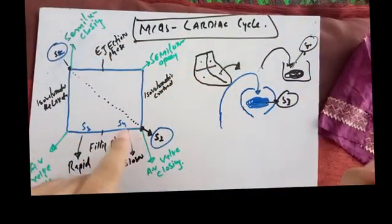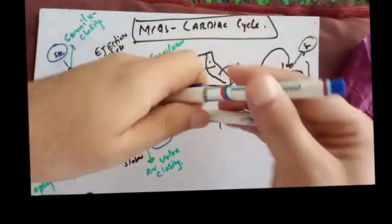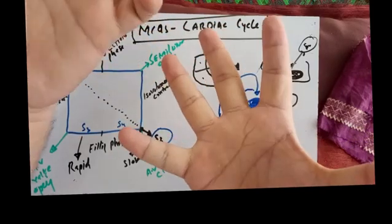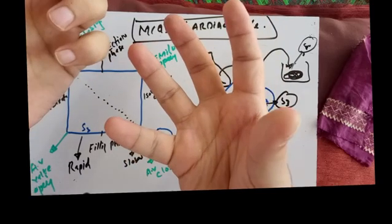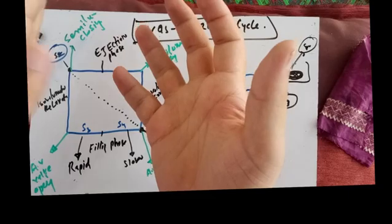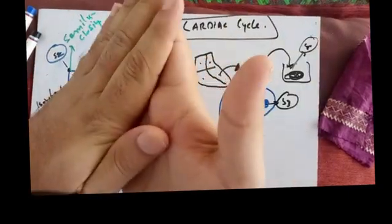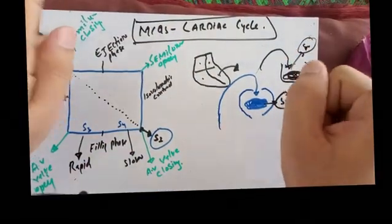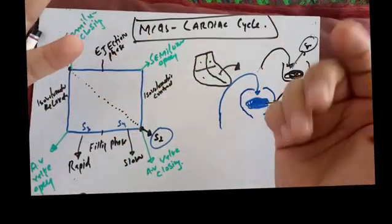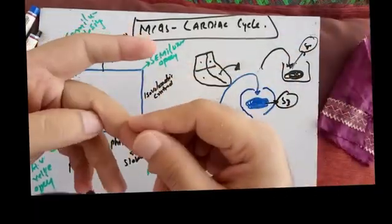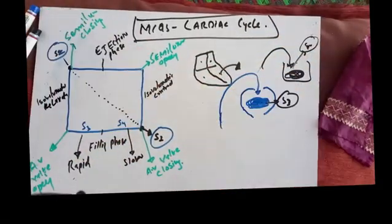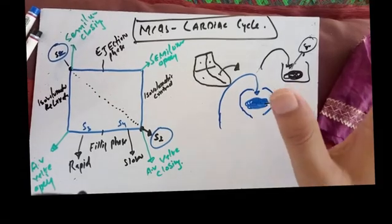S4 is produced due to left atrial contraction. Normally when the atrium contracts, the ventricle dilates and there is no sound. But when the left ventricle is stiff and not dilating, blood strikes the stiff ventricle with force, producing S4. S3 is related to volume or volume overload — seen in pregnancy, children, CCF, and renal failure. S4 is related to pressure — seen in ischemic heart disease, left ventricular hypertrophy, and hypertension.